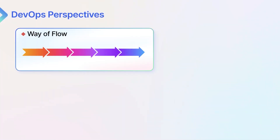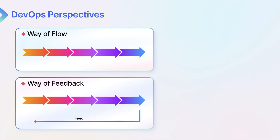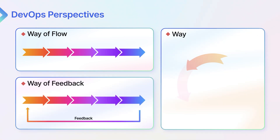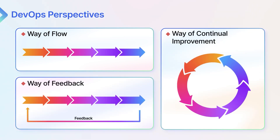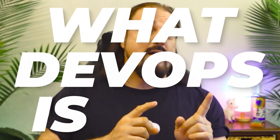DevOps overcomes the barriers by embracing three perspectives. When we're looking to remove these barriers, there are the three ways: namely, the way of flow, the way of feedback, and the way of continual improvement. You're going to see a lot more of these concepts in later chapters. But before we get into the patterns and concepts that comprise the DevOps perspective, let's talk a little bit about what DevOps is not.